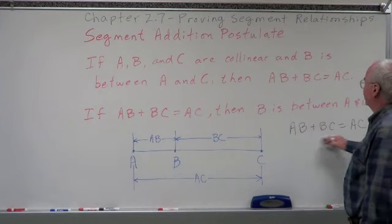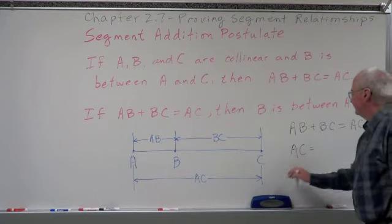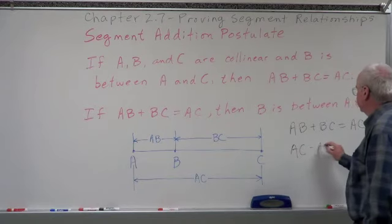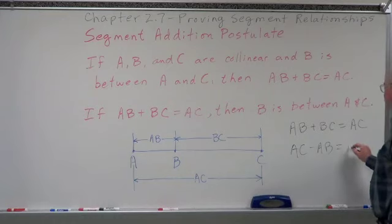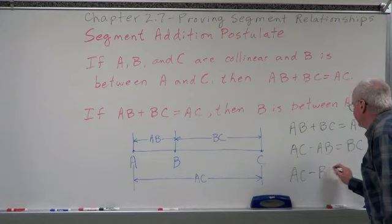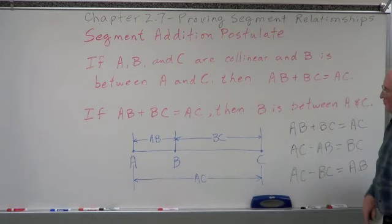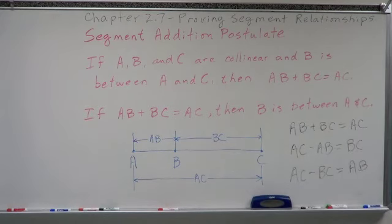We have equations that look like this. AC minus AB equals what? BC. And AC minus BC equals AB. All we're doing is rearranging these through the subtraction and substitution properties of algebra that we've brought over to geometry. This is the Segment Addition Postulate, also known as SAP. We will refer to it a great deal this year in geometry.